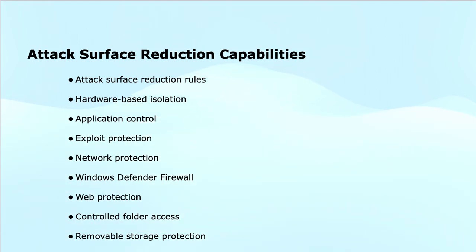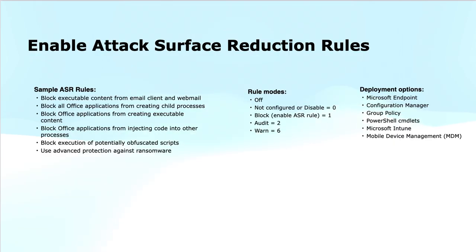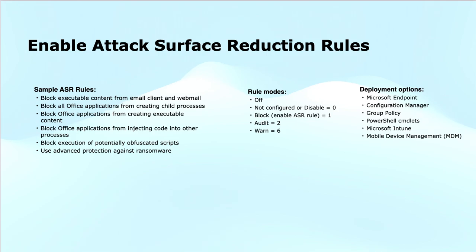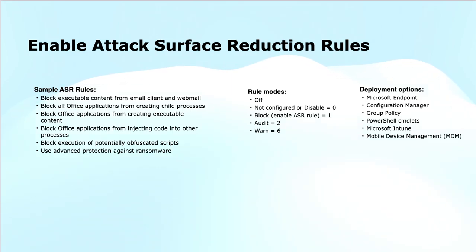Now that we have discussed the ASR capabilities, let us look at the attack surface reduction rules. Some sample ASR rules include: block executable content from email clients or web mail, block all Office applications from creating child processes, block Office applications from creating executable content, block Office applications from injecting code into other processes, block execution of potentially obfuscated scripts, and use advanced protection against ransomware.